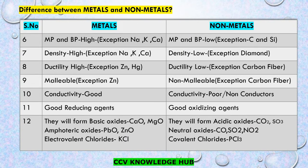Let us know the other differences between metals and non-metals. Metals have high melting point and boiling point. Here is an exception: sodium, potassium and calcium have low melting point and boiling point. Non-metals have low melting point and boiling point. Here is also an exception: carbon and silicon have high melting point and boiling point.